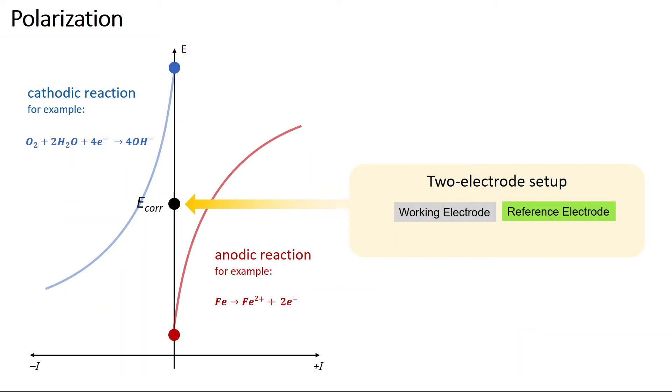To gain information on the reaction or corrosion kinetics of a system, the working electrode needs to be polarized from its open circuit potential so that the potential current curve can be measured.